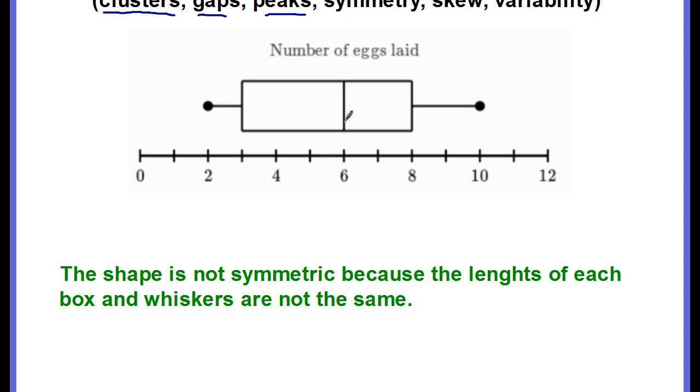If you were to draw a line down the center or even look at this middle line here, you could see that the right side is a little bit shorter than the left side. The left side is a little bit longer. And because that left side is a little bit longer, you would say that it is skewed to the left.